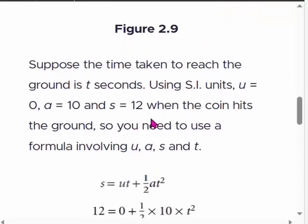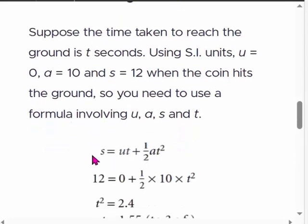Since we don't know final velocity v, we use what we know: initial velocity, acceleration, distance, and time. Therefore we can use s = ut + ½at².